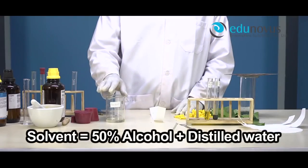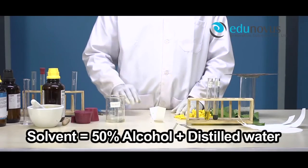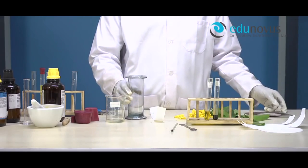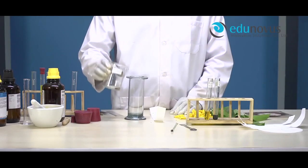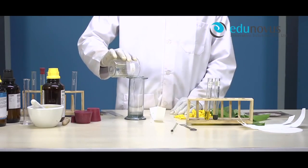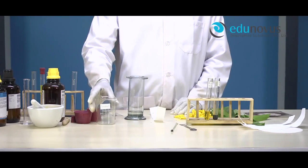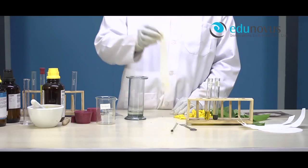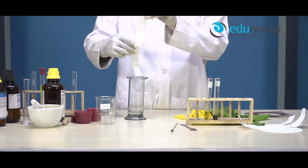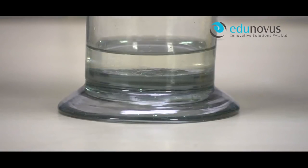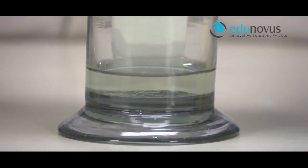The solvent here is 50% alcohol and distilled water. Transfer the solvent into the glass jar. After that, suspend the filter paper vertically in the glass jar in such a way that the baseline remains above the solvent level.